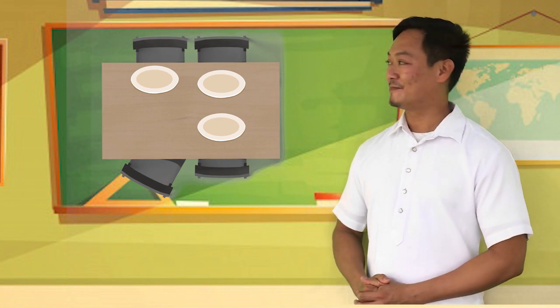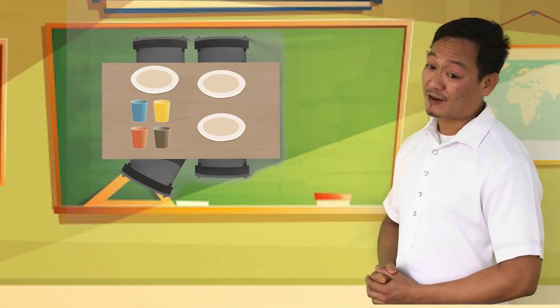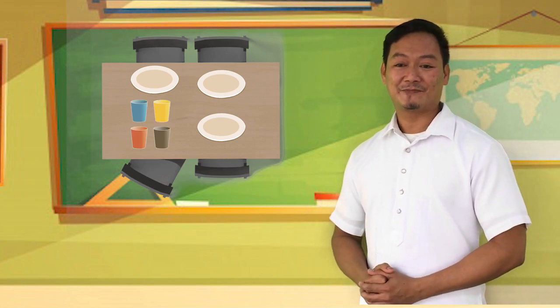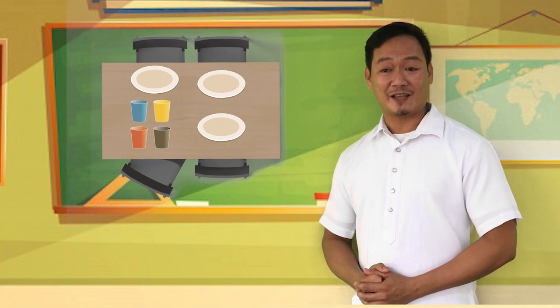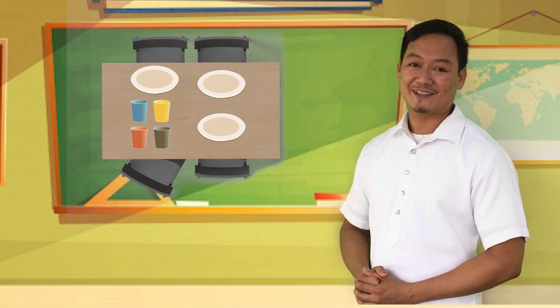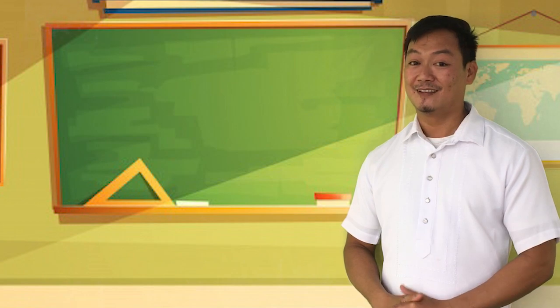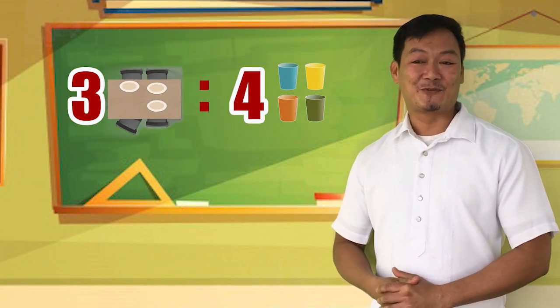There are three plates and four cups on the table. What is the ratio of plates to the cups? You're right. It's three to four.